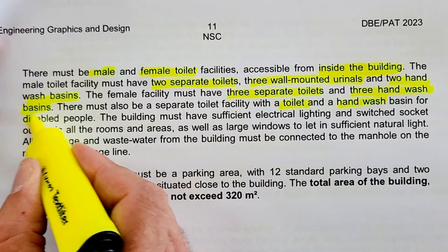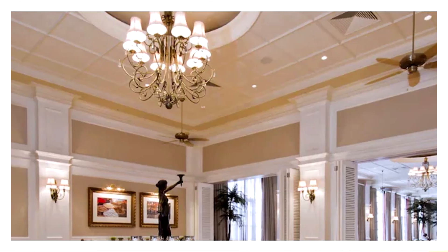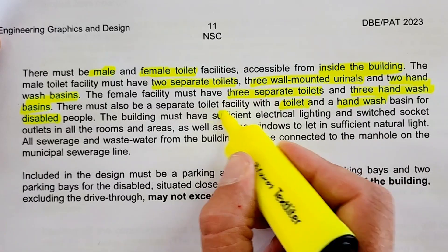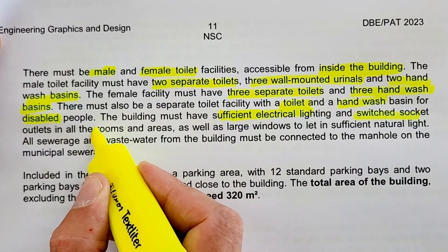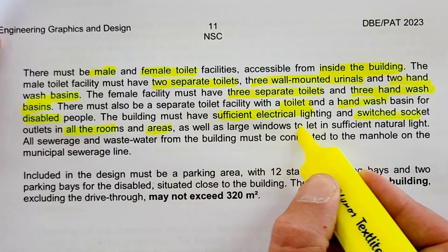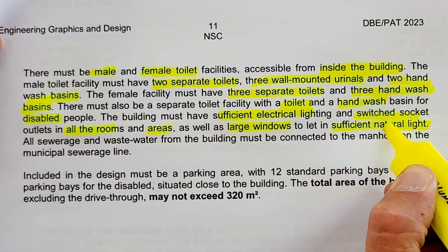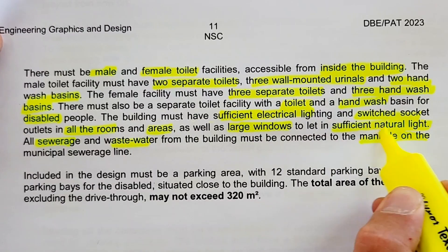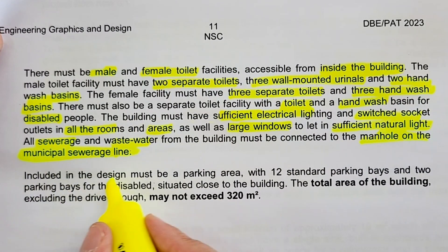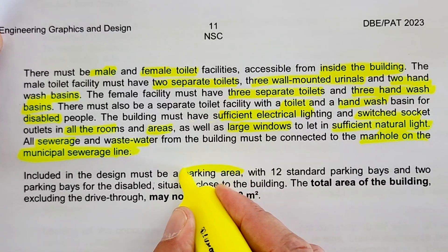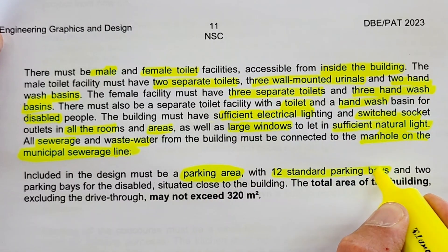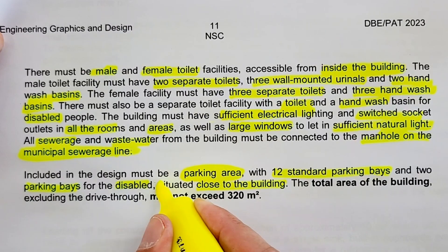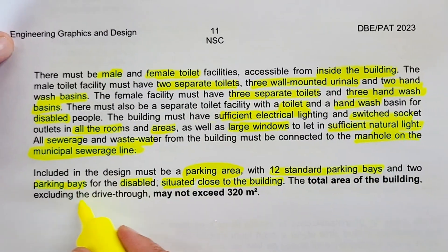There must also be a separate toilet facility with a toilet and hand-wash basin for disabled persons. The building must have sufficient electrical lighting and switch socket outlets in all rooms and areas, as well as large windows to let in sufficient natural light. All sewer and wastewater must be connected to the municipal sewer line. The design must include a parking area with 12 standard parking bays and two parking bays for the disabled, situated close to the building. The total area of the building, excluding the drive-through, may not exceed 320 square meters.